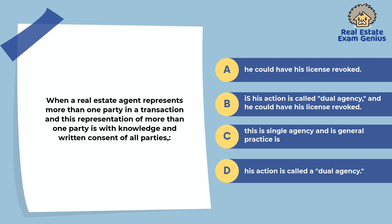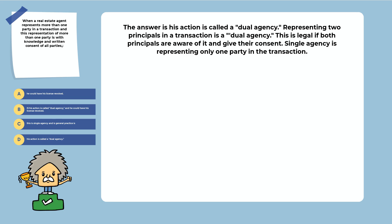When a real estate agent represents more than one party in a transaction, and this representation is with knowledge and written consent of all parties: he could have his license revoked, his action is called dual agency and he could have his license revoked, this is single agency and general practice, or his action is called a dual agency. The answer is: his action is called a dual agency. Representing two principals in a transaction is a dual agency, which is legal if both principals are aware of it and give their consent. Single agency is representing only one party.